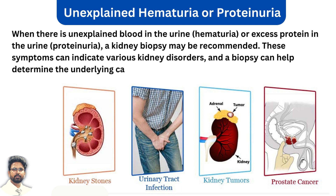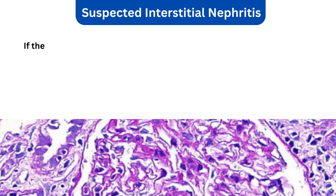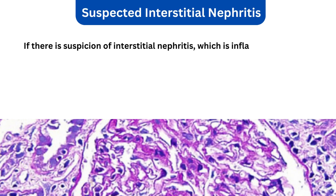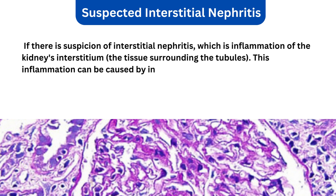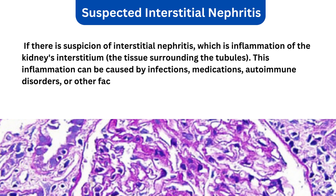If there is suspicion of interstitial nephritis — which is inflammation of the kidneys' interstitium, the tissue surrounding the tubules — this inflammation can be caused by infections, medications, autoimmune disorders, or other factors. A biopsy can help evaluate the extent of inflammation and guide appropriate treatment decisions.